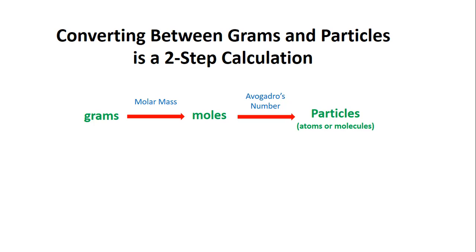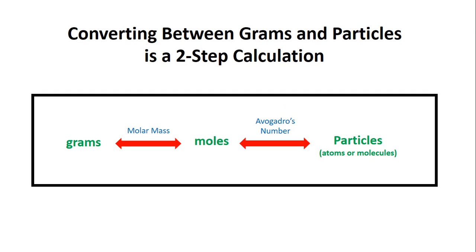Sometimes in the problem, though, you don't start with grams. You start on the other side. You start with particles. Well, in this case, we can do the same thing, but it's essentially backwards. The first conversion factor that you're going to be using to go to moles is, of course, Avogadro's number. The second conversion that you're going to need is molar mass. So I'm going to take these two conversions and basically create just one huge plan for you that you can always use.